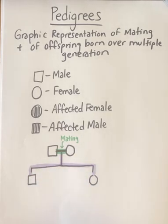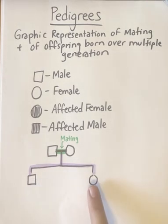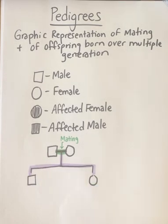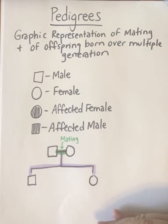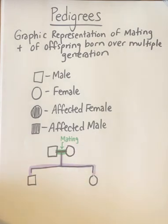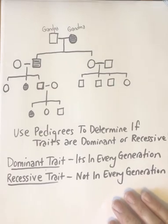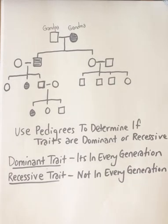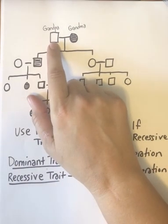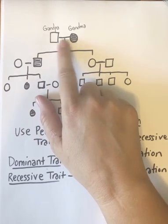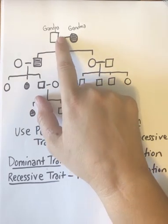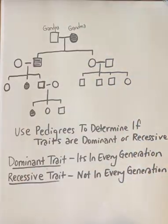The purple at the bottom here shows that they had one son and one daughter. So we're going to see a graphic representation going by generations to see mating and offspring. I drew out my pedigree with several generations. We have my grandfather and my grandmother, and then coming off of their mating is my dad and my aunt.